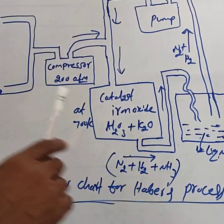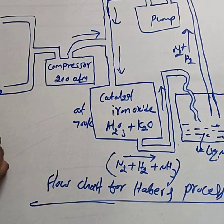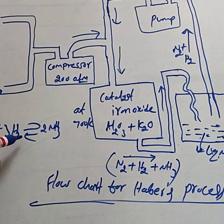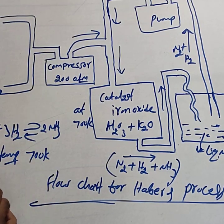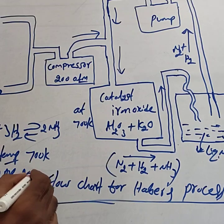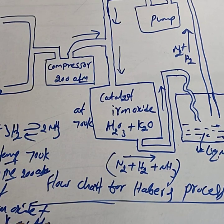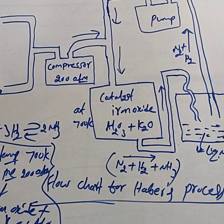This is the flowchart for the Haber process, which carries one mark. So in the Haber process: the reaction N₂ + 3H₂ → 2NH₃ carries one mark, the favorable conditions according to Le Chatelier's principle — low temperature 700 Kelvin, high pressure 200 atmosphere, catalyst iron oxide with K₂O and Al₂O₃ — carries one mark, and the flowchart carries one mark. Practice this reaction with the flowchart.